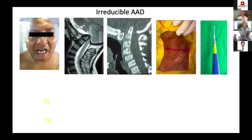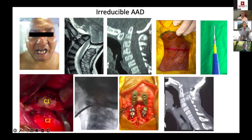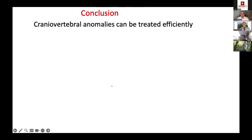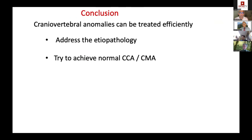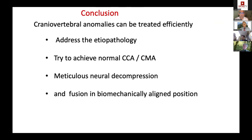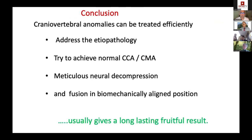In an irreducible AAD case with only one finger-breadth of mouth opening, extrapharyngeal release was performed — using a bent curette to release all tight soft tissue structures — followed by posterior reduction, fixation, and fusion with significant improvement in alignment. The patient improved neurologically. In conclusion: address the idiopathology, achieve normal clivus canal angle and cervicomedullary angle, and perform meticulous neural decompression and fusion in a biomechanically aligned position for long-lasting fruitful results.